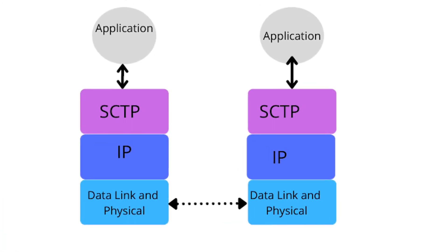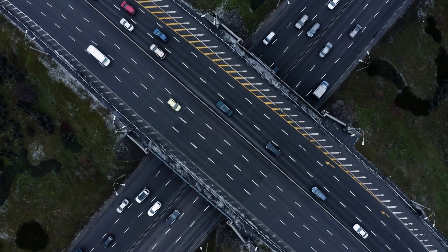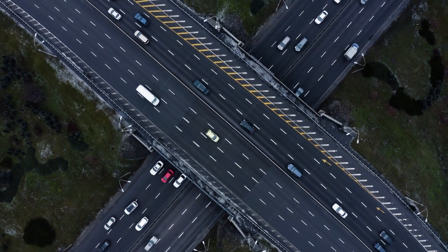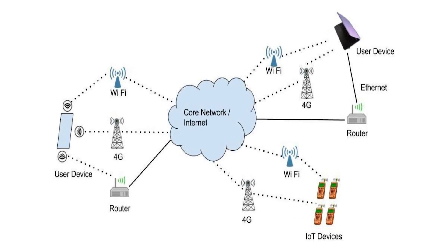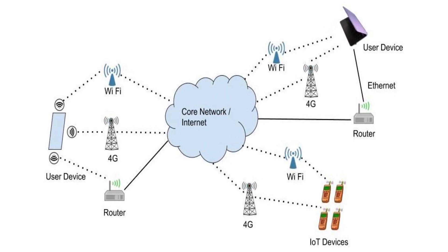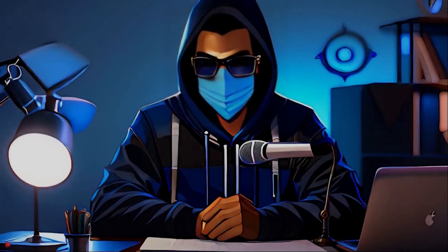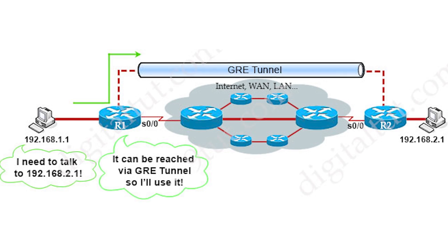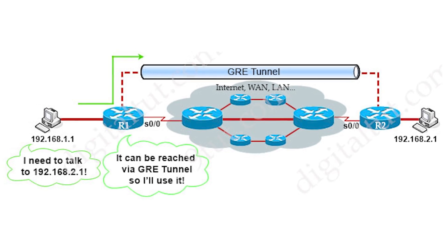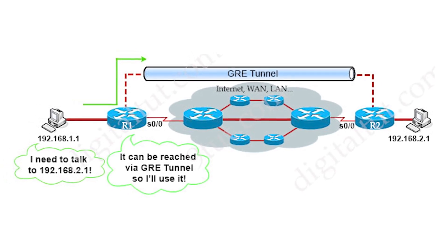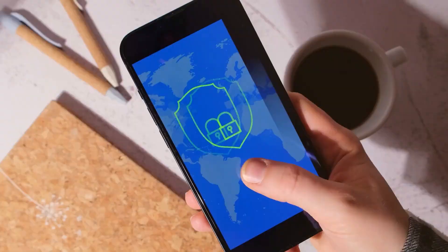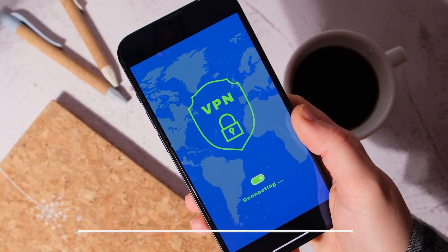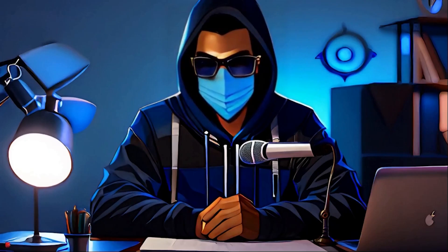SCTP is next — a protocol designed for telecom networks. It's like having multiple lanes on a highway, allowing multiple messages to be sent over the same channel without traffic jams. And finally, we have GRE — an encapsulation protocol that wraps packets inside a tunnel. It's like sending a letter within a letter, making it useful for secure VPN connections.